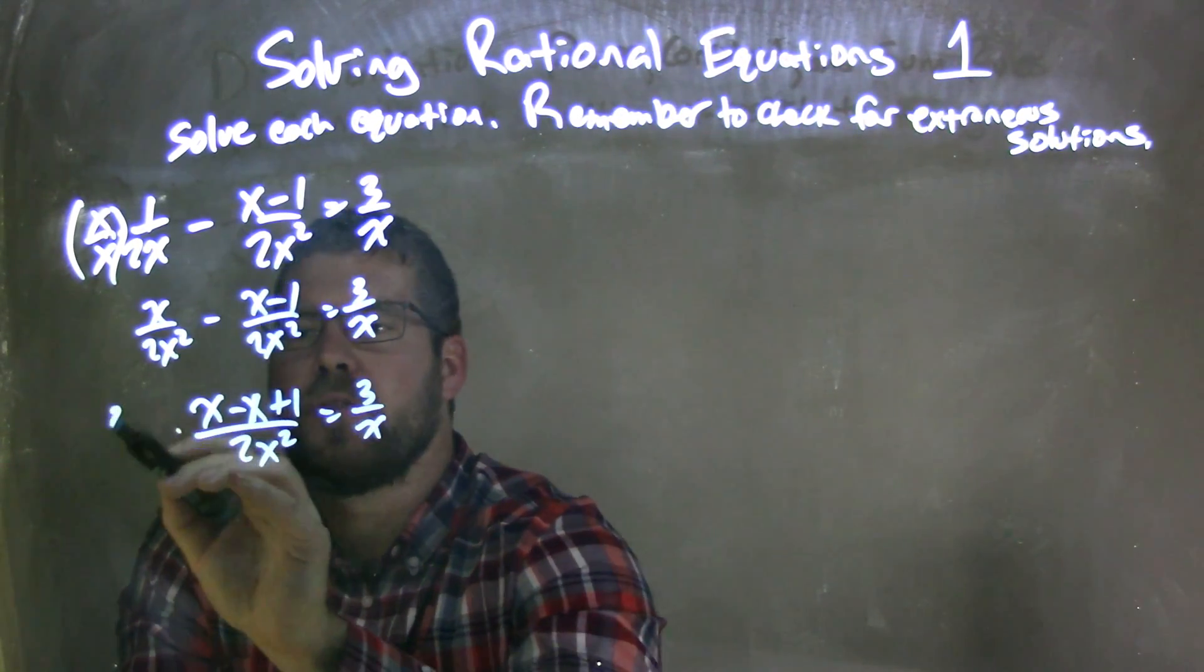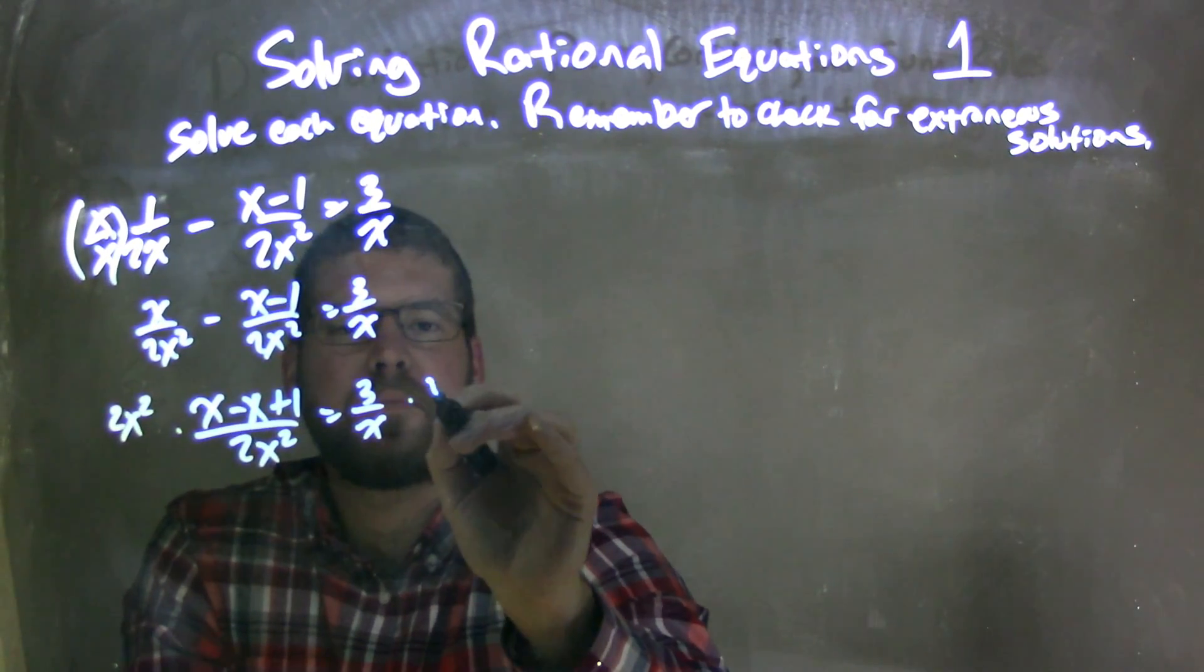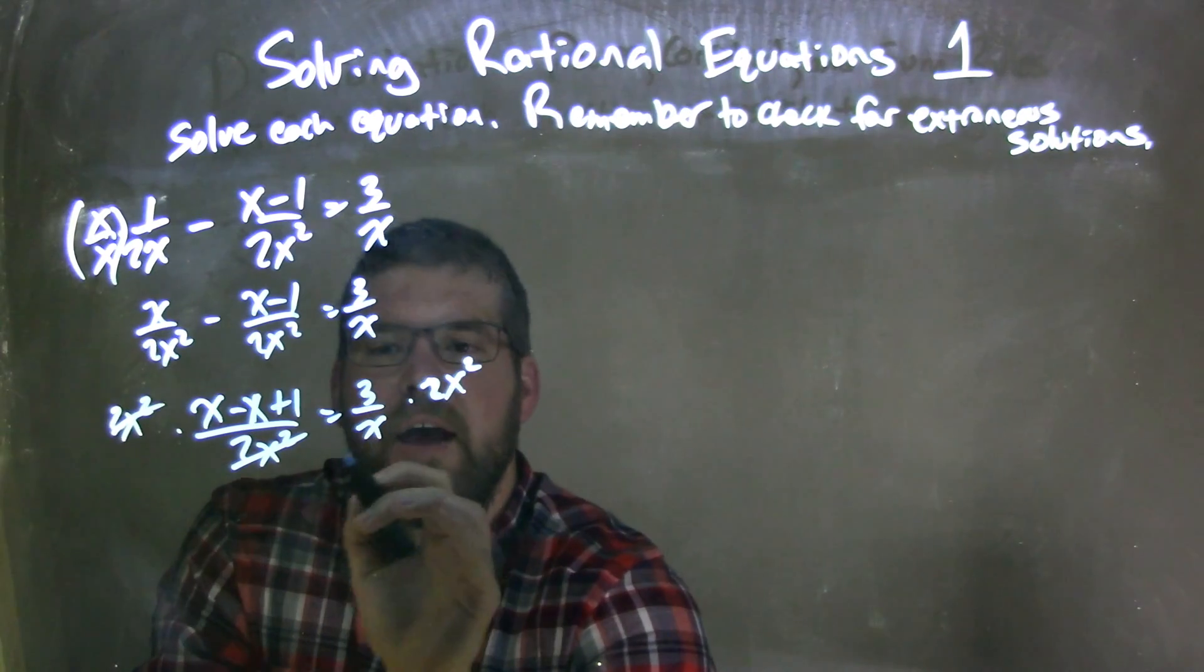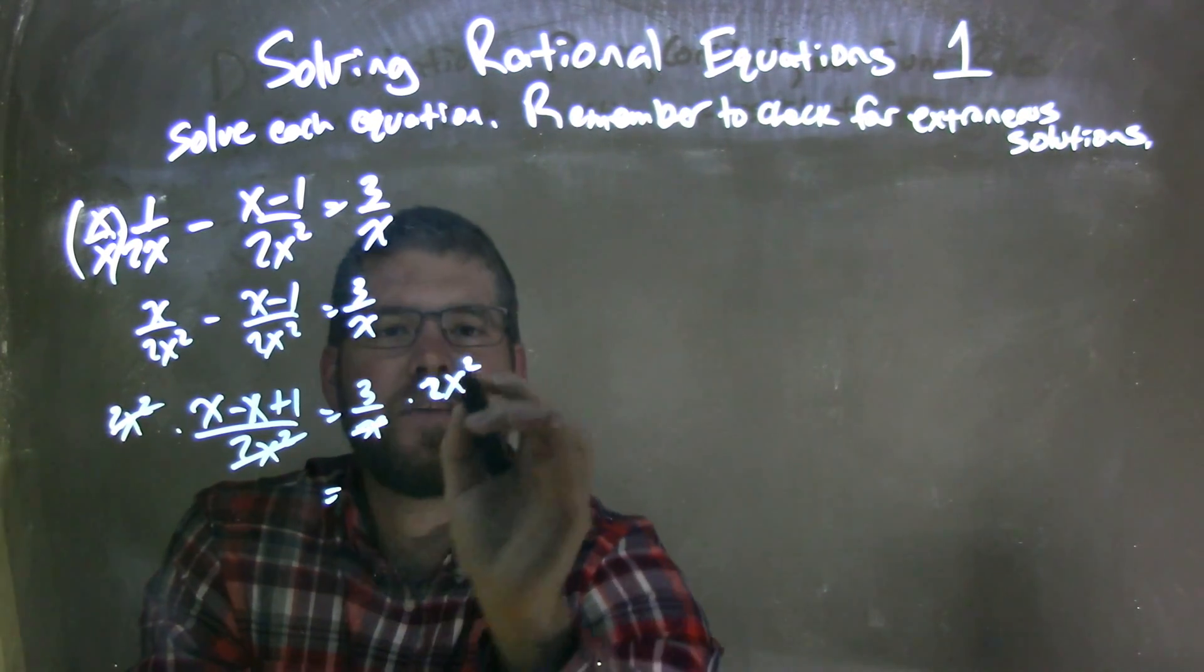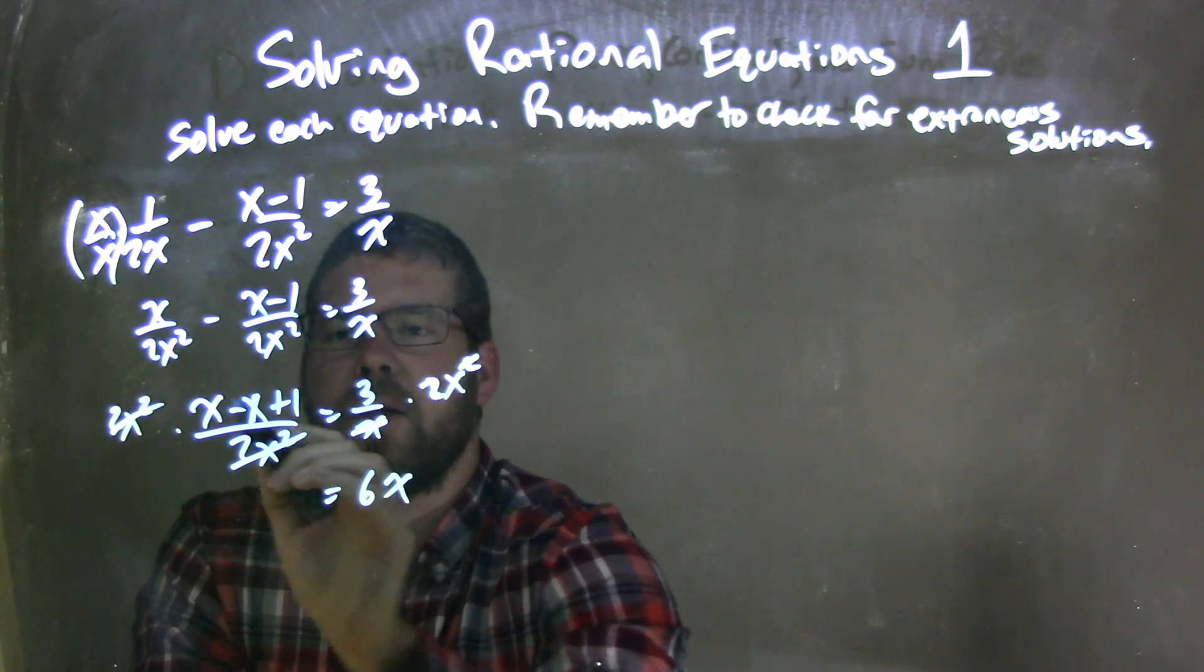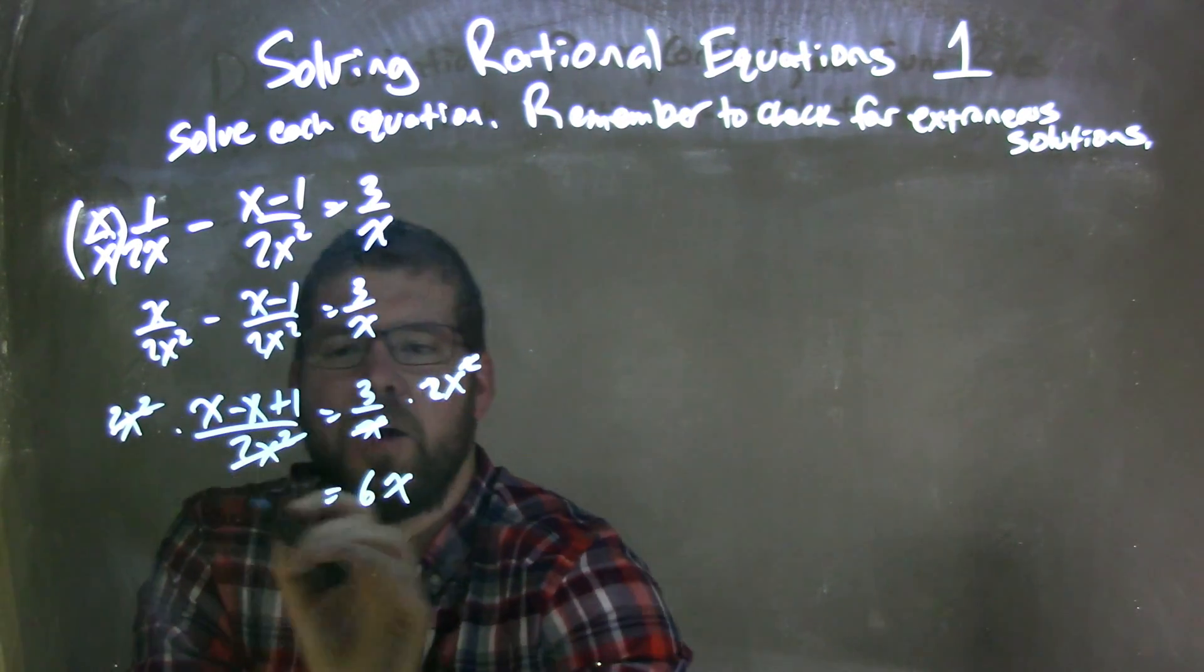I now can multiply both sides by 2x squared. That eliminates the 2x squared on the left-hand side, and then on the right-hand side it eliminates the x, just giving me now 3 times 2x is 6x, and the left-hand side, x minus x is 0 plus 1 is 1.